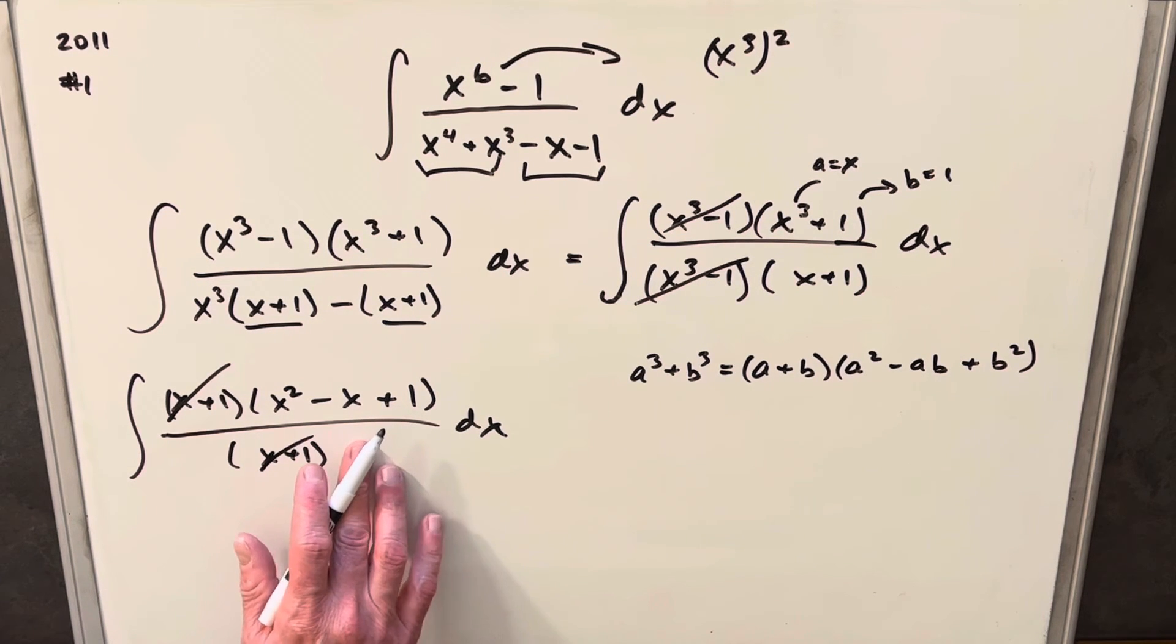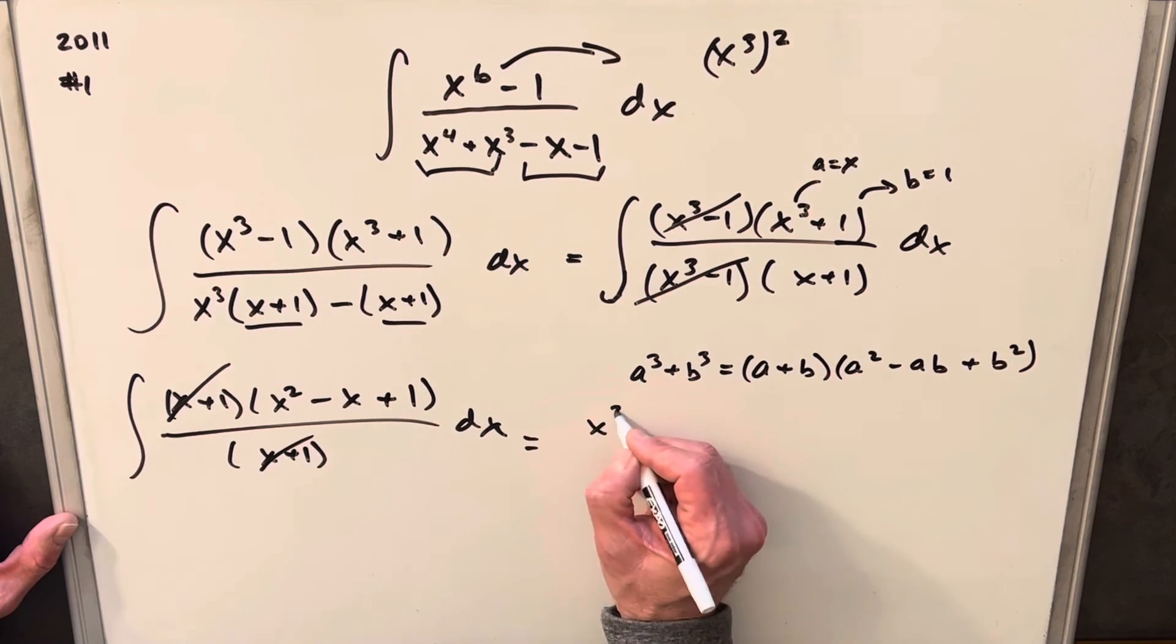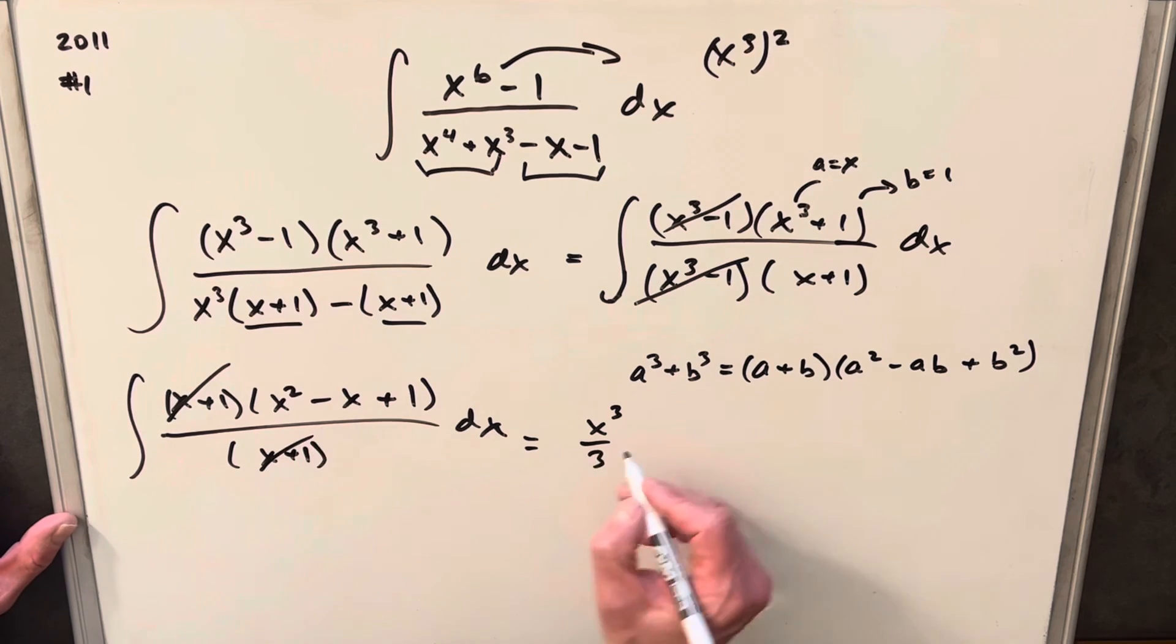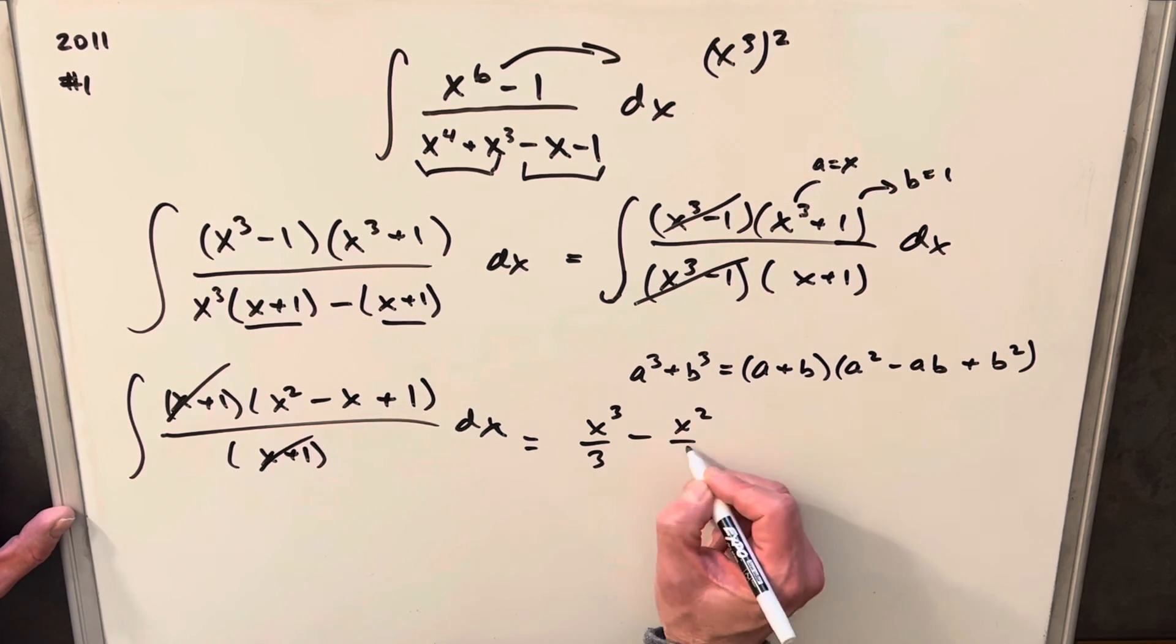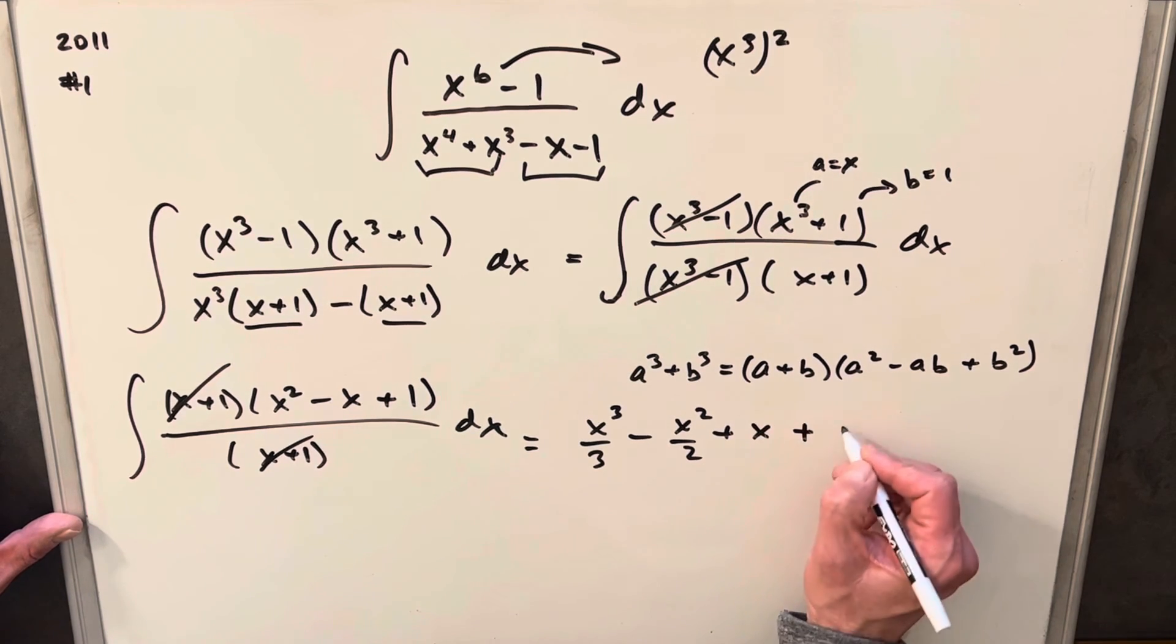And now all we've got left is a polynomial, so this is just basic power rule and we can finish it off. Integral of x squared is going to be x cubed over 3, minus integral of x is going to be x squared over 2, plus 1 is going to be an x plus c.